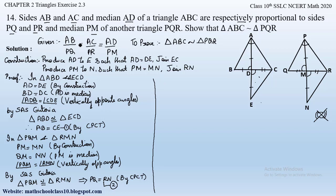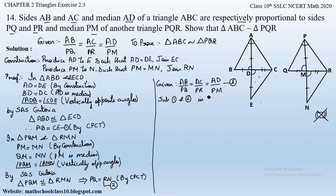From what was given: AB/PQ = AC/PR = AD/PM — call this equation 3. Substituting equation 1 (AB = CE) and equation 2 (PQ = RN) into equation 3, we get CE/RN = AC/PR = AD/PM.